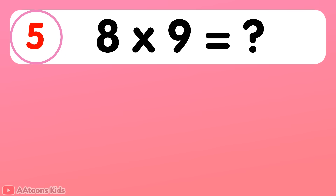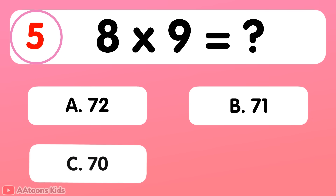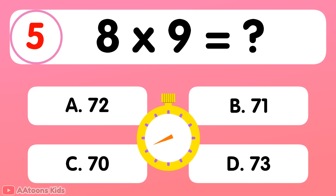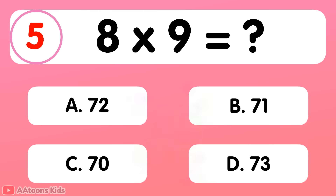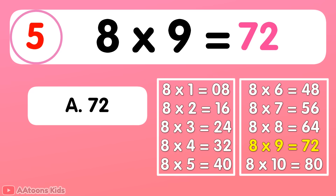8 times 9 is equal to... 72. 8 times 9 is 72.